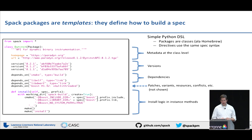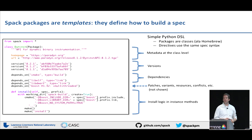At the bottom there is the install method, which is supposed to look like shell — it's Python but uses Python functions that work like shell commands. You can see it just says: with this working directory, run CMake with some options, then make and make install. The cool thing is that in this install method, you're guaranteed that all those dependencies got built first. The spec object passed in tells you all the details — you can say 'hey spec, what's the prefix of Boost?' You don't have to search for where MPI or other dependencies are installed on the system. SPAC has already done that, and your job is just to translate that into build instructions.